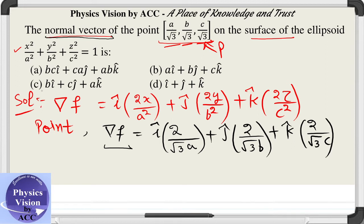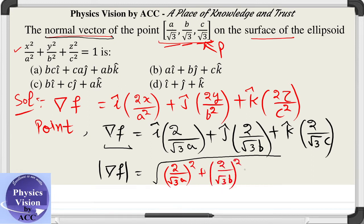But looking at the options, it doesn't seem to be matching with any of them. Let us calculate its magnitude then. Its magnitude will be the square root of the sum of squares of all the terms: 2 by root 3 a whole squared plus 2 by root 3 b whole squared plus 2 by root 3 c whole squared.